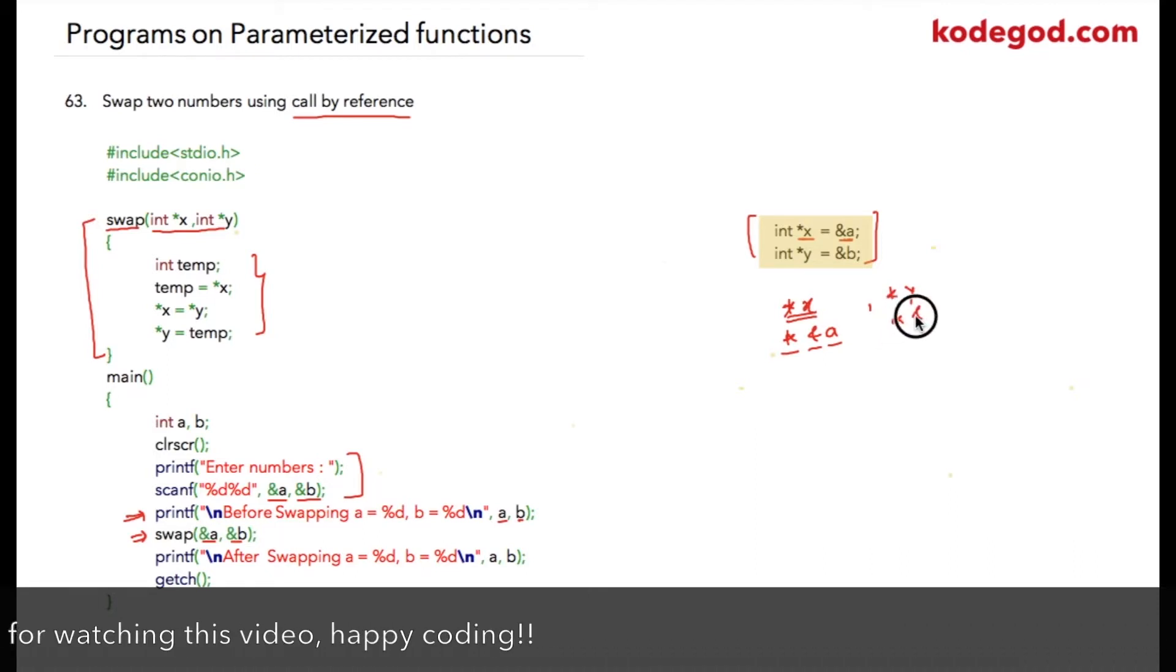And star y can be used to access value of b, because star y is nothing but star address of b, that is value at address of b. In the swap function, I have taken one temporary variable to swap two values.